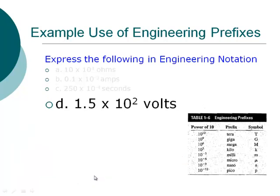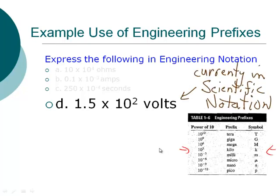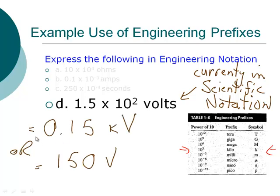Finally, we have 1.5 times 10 to the power of 2 volts. The closest multiple of 3 to 10 to the 2 is 10 cubed, which is kilo. This expression is in scientific notation, but we want to put it in engineering notation. So 1.5 times 10 to the 2 volts equals 0.15 kilovolts, because I moved the decimal place one position to the left, effectively multiplying by 10.